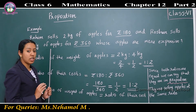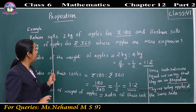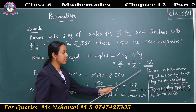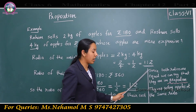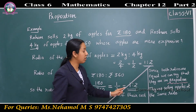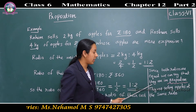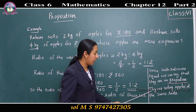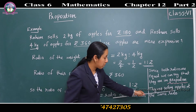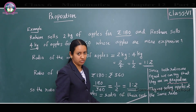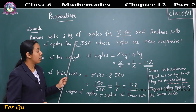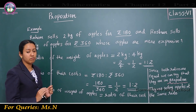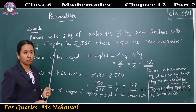Whenever two ratios are equal, we say they are in proportion. Since both ratios are equal, we can say that they are in proportion — they are selling apples at the same rate. When two ratios are equal, we say they are in proportion.